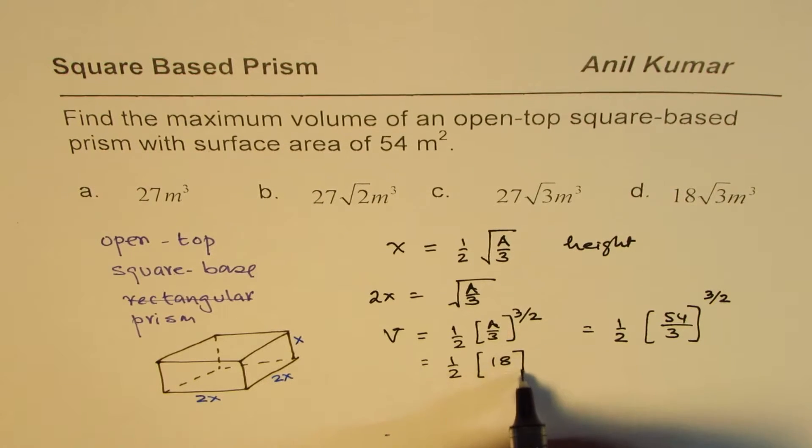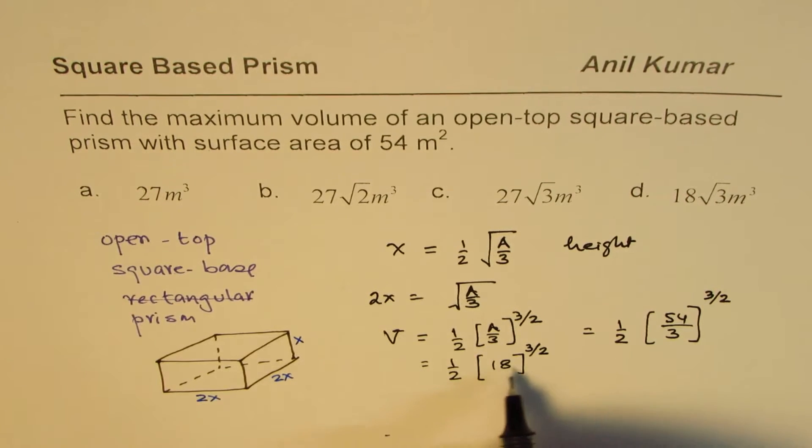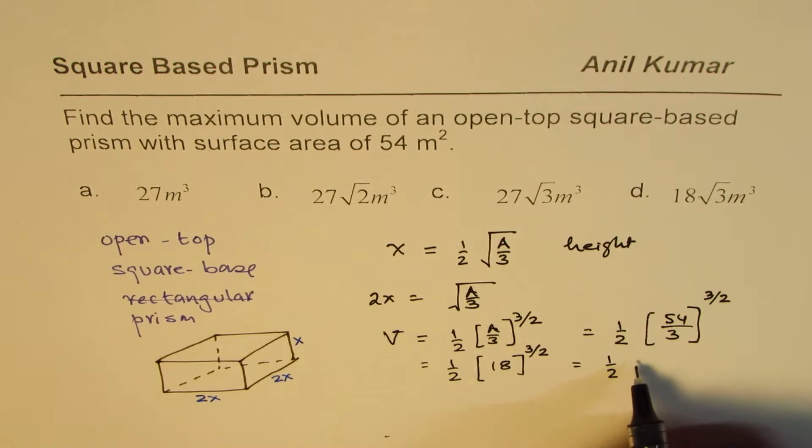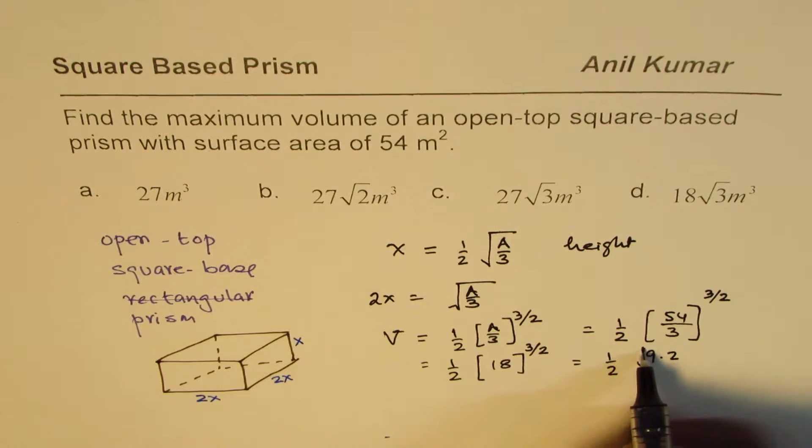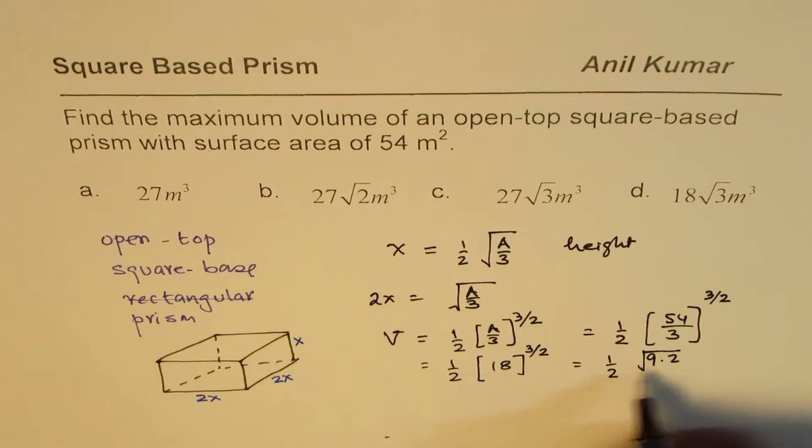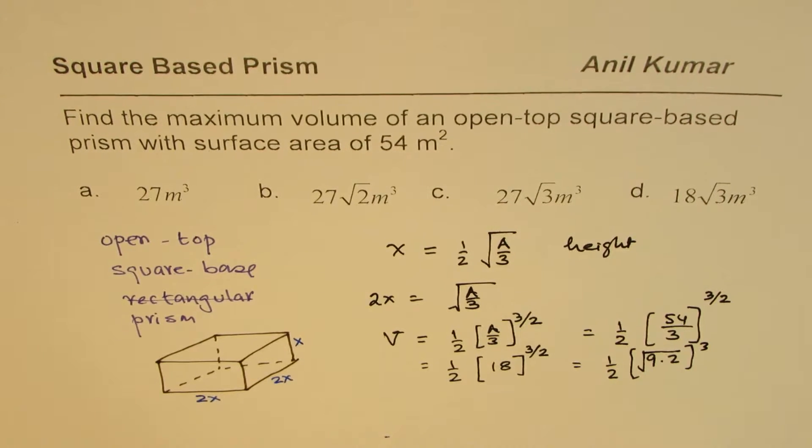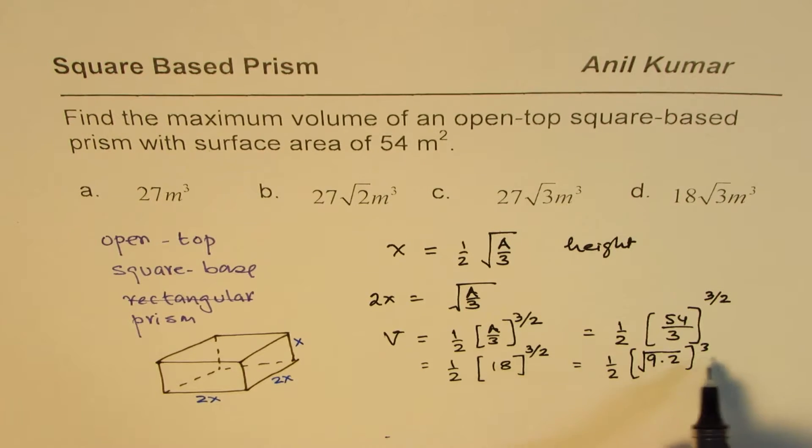So that gives you 18 to the power of 3/2. So you have to do square root of 18 and then cube it. So it is half of—square root of 18 is you can say 9 times 2. Square root of 18: 9 times 2 is 18, and then you have to cube it. Then you have to cube it to get the answer, or you could first cube and then do square root. That was actually simpler, so I'll do that first.